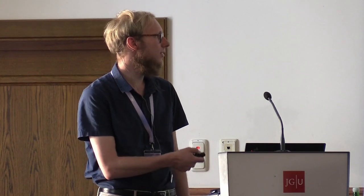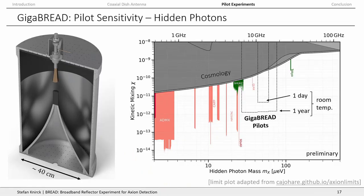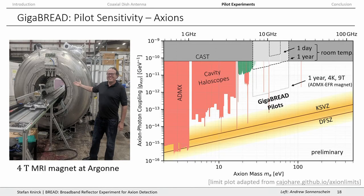Putting all this together, these are the sensitivities we are expecting, just for hidden photons without any magnet yet. The power of this approach is that you get really broadband coverage compared to existing limits. We will pair this with a magnet — either the ADMX EFR magnet, or first perhaps a weaker magnet at Argonne which is also available to us. Using a four Tesla magnet in a room-temperature experiment, you could get competitive with the CAST limits. Using the 10 Tesla MRI magnet at Fermilab for ADMX, you can probe a significant portion of the ALP parameter space in the gigahertz frequency range.